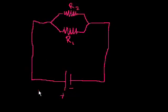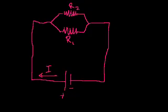The non-intuitive convention is that the current flows from the positive to the negative terminal, but we know that the electrons are actually flowing in the other direction. I think it's so important to understand what's actually happening, as opposed to the convention.